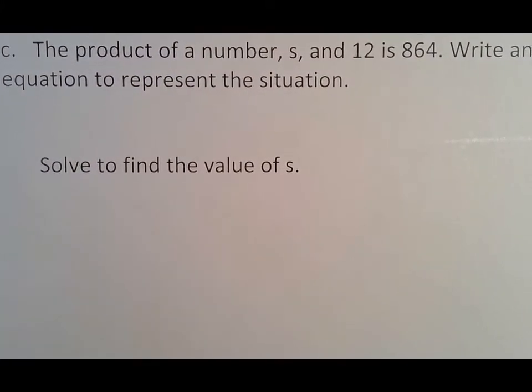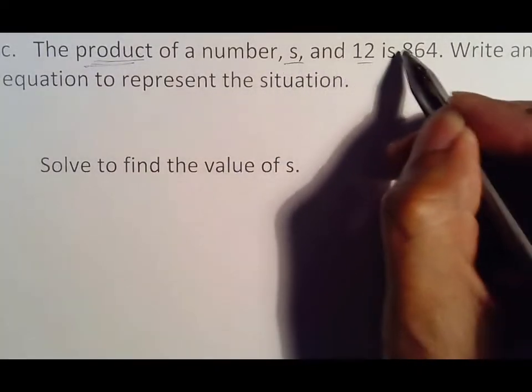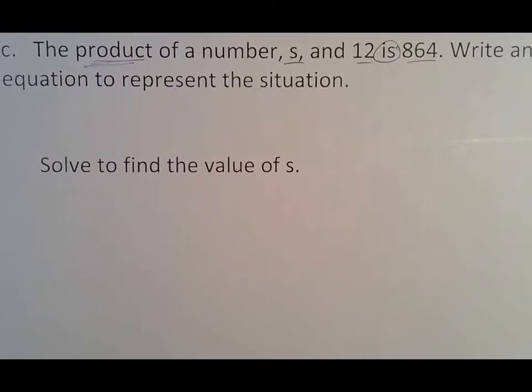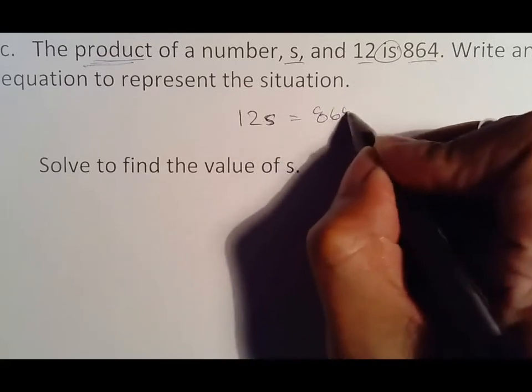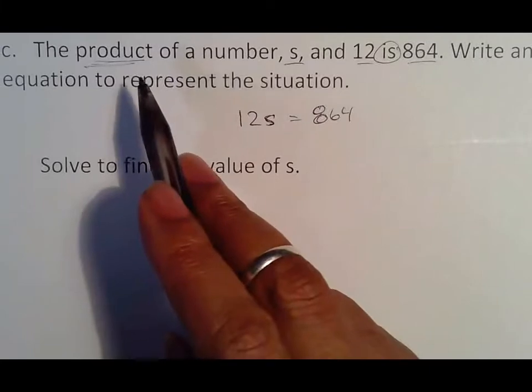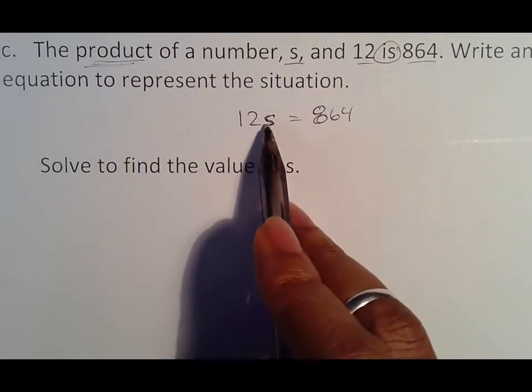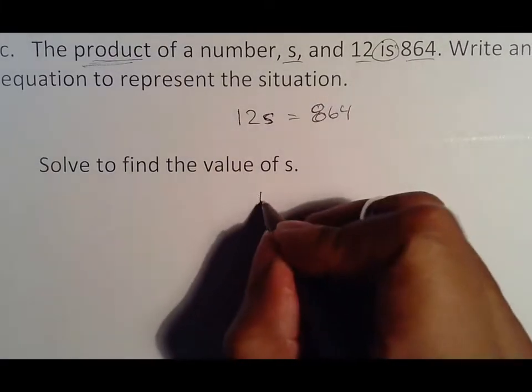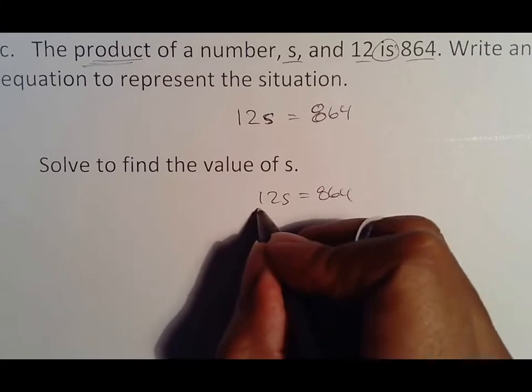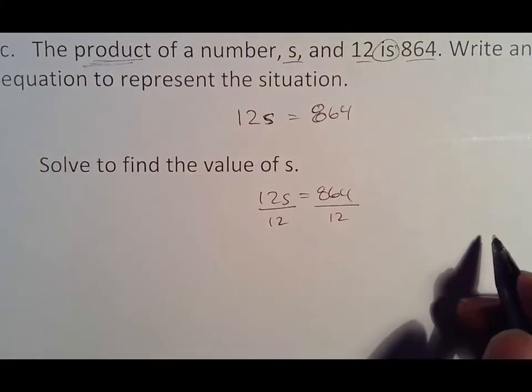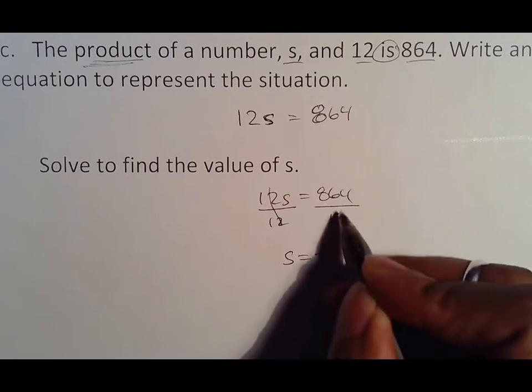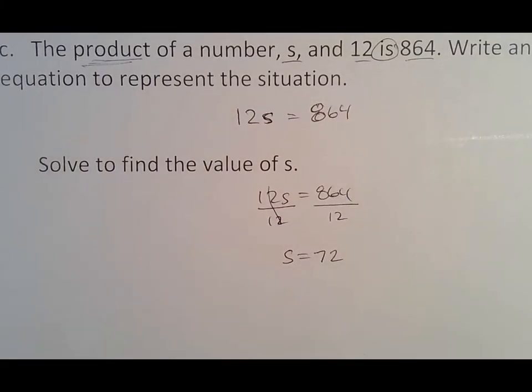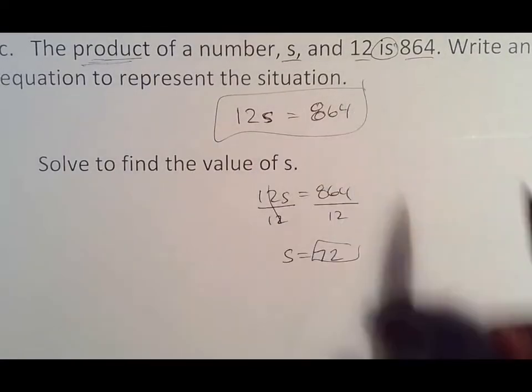The product of a number s and 12 is 864. Product means multiply, of s and 12, is means equals 864. In multiplication, no matter what the order is, we put the number first, variable second. It wouldn't matter if it said the product of 12 and s or s and 12, it's always number first, variable second. 12 times s. When we solve, we're going to divide by 12 on both sides. The 12s cancel out, s comes down. 12 goes into 84 seven times, 72 would be our answer.